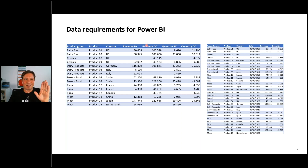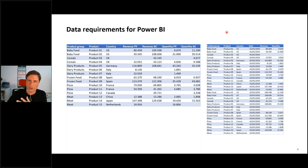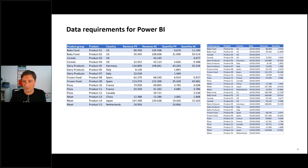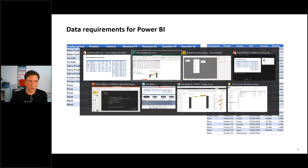It will be easier to start if you can bring two columns next to one another: revenue actual, revenue previous year, quantity actual, quantity previous year. But if you export your data from a sales system, you'll probably have it in a slightly different format — just revenue and quantity with a date field — and then calculate the previous year's value from the date, especially in Power BI. Both ways work. Now let's go to Excel.